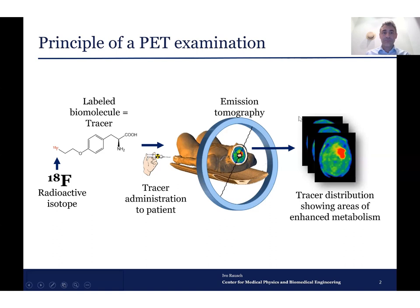Nuclear medicine imaging is based for PET and SPECT on the tracer principle. That means one takes a biomolecule which is specific to a functional metabolic process one wants to assess, and one then labels this biomolecule with a radioactive nuclide — in case of PET a positron emitter — and injects it into a patient. The biomolecule distributes in the body according to its properties, and the radiation distribution arising from the decay is measured by the positron emission tomograph. From the data one can reconstruct a three-dimensional distribution of the tracer.